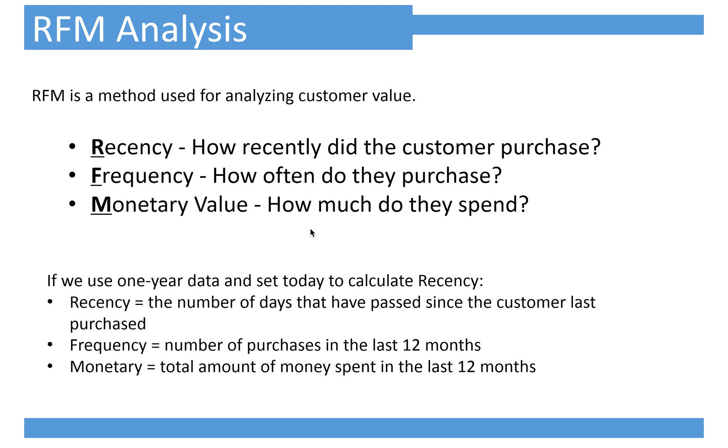R means recency, F means frequency, and M means monetary. If we use an example to see,